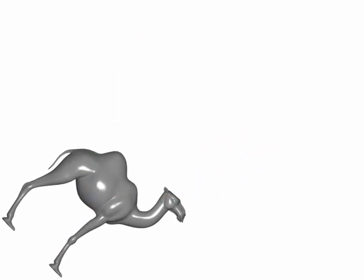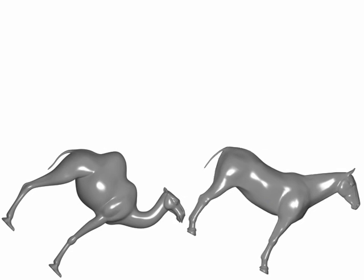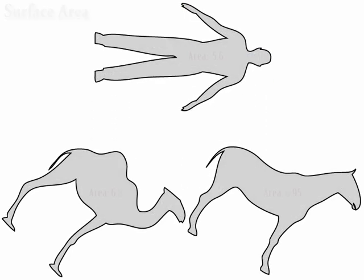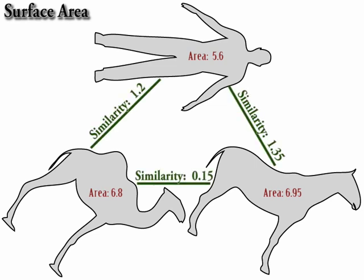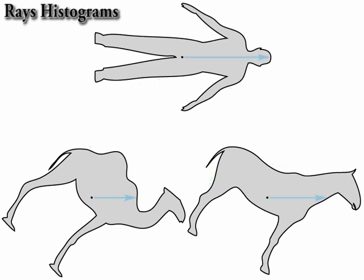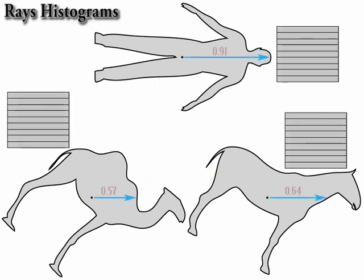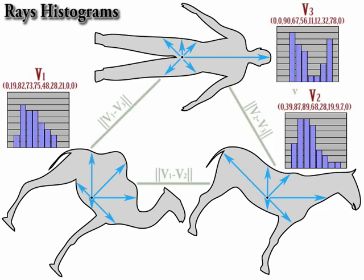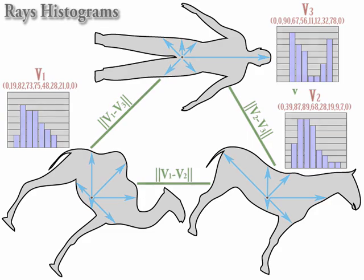Now we can measure different things in order to quantify the similarity between 3D models. For instance, we can measure the model's surface area and use it as a very simple signature. We can also shoot hundreds of rays from the center of mass in different directions, measure the length of each ray to the surface, and encode it in a histogram of distances. We can then use these distances as a signature vector to measure similarity.